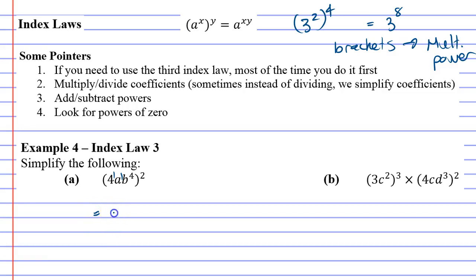So when you do this, 1 times 2 is 2, and for the A, 1 times 2 is 2, and for the B, 4 times 2 is 8. Notice that each power is multiplied by the power outside the brackets. We can go one more step because 4 squared is 4 times 4, or 16.